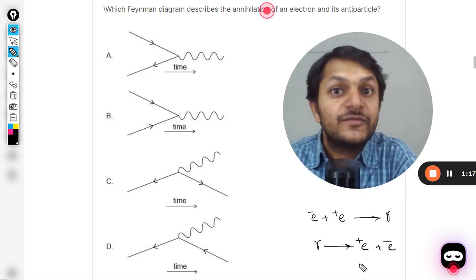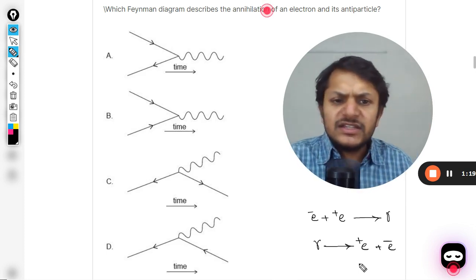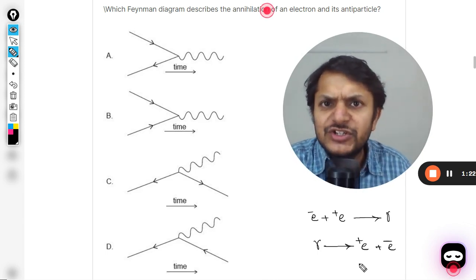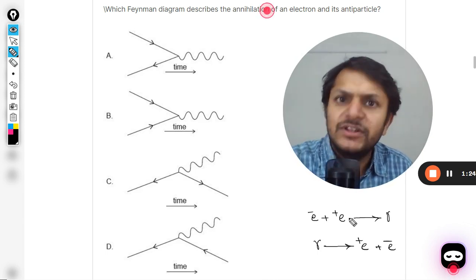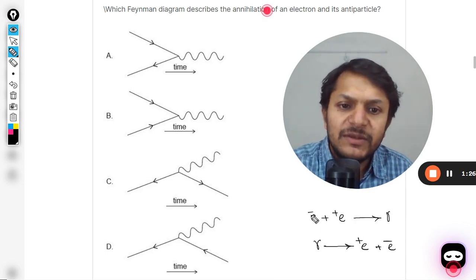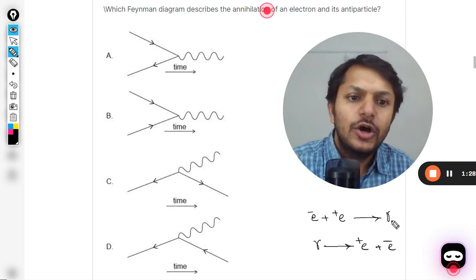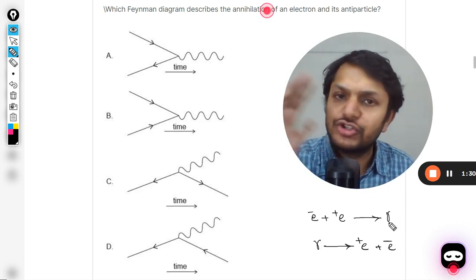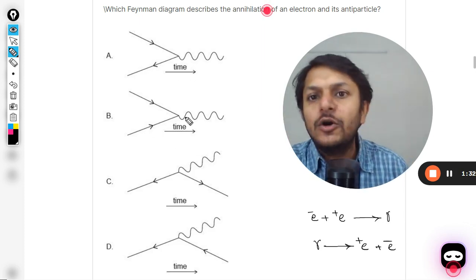This is, in simple terms, conservation of charge principle that we are already working with. Even in this topic we are working with that. See, minus one plus one is zero. Gamma gamma is just a photon, the charge is also zero.